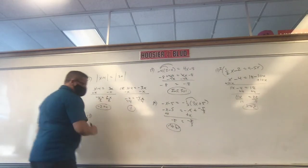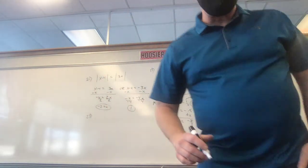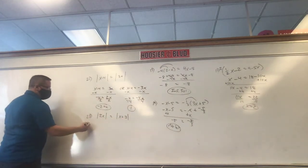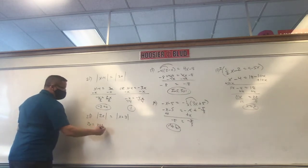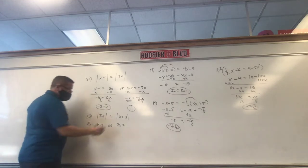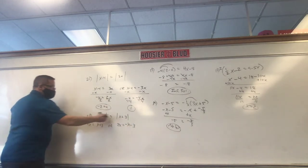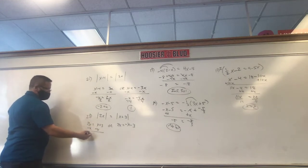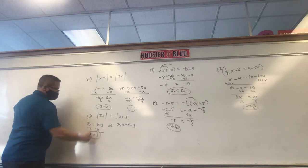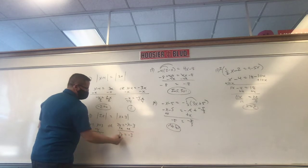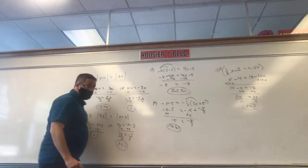Number 23: absolute value of 2x equals x plus 3. So 2x could equal x plus 3, or 2x could equal negative x minus 3 — you negativize both terms. First equation: 2x minus x equals 3, so 1x equals 3, x equals 3. Second equation: 2x plus x equals negative 3, so 3x equals negative 3, x equals negative 1. Both negative 1 and positive 3.